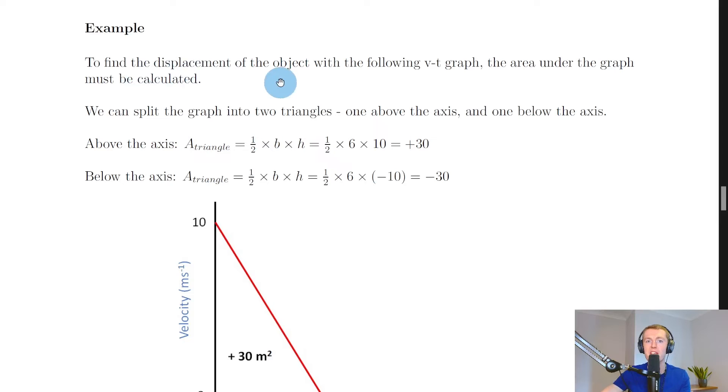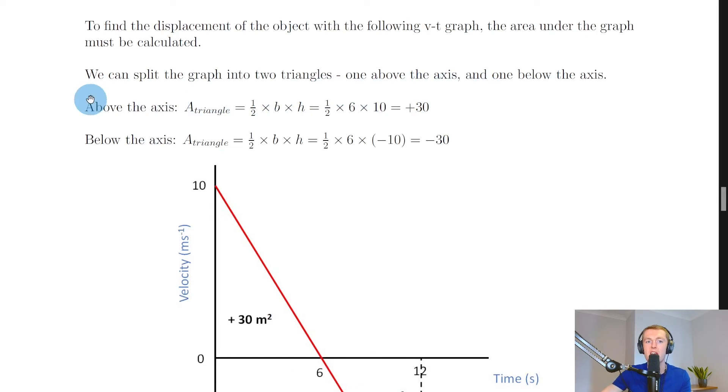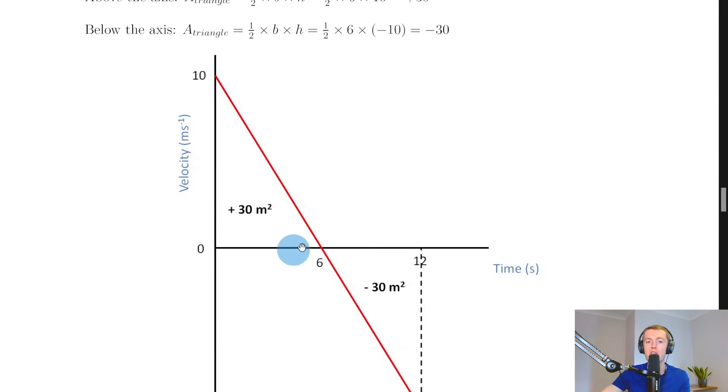It says here to find the displacement of the object with the following vt graph the area under the graph must be calculated. So here we've got a graph like this we've got velocity against time. We can split the graph into two triangles one above the x-axis and one below the x-axis. Remember we said the area is going to be enclosed between the line and the x-axis so I'm interested in this area and this area.